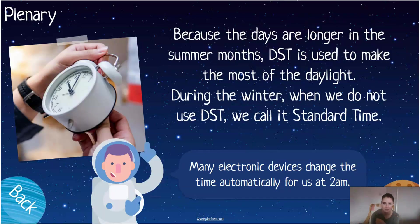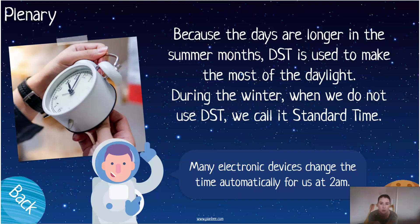Because days are longer in summer, daylight saving time is used to make the most of daylight — that's why in summer we can have days lasting as long as 16 hours. During winter we don't use DST, just standard time, because days go back to their normal shorter length. Most digital devices now change the time automatically for you, but when clocks were all analog, you had to remember. It actually changes at 2 a.m., going back to 1 a.m.